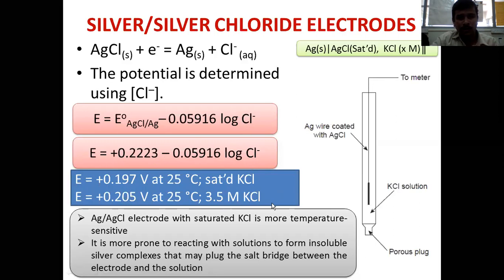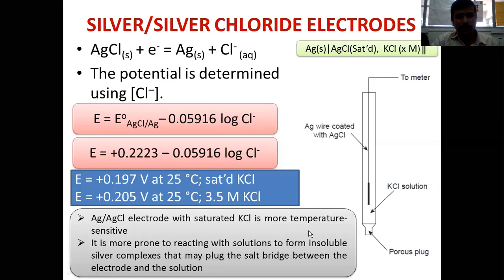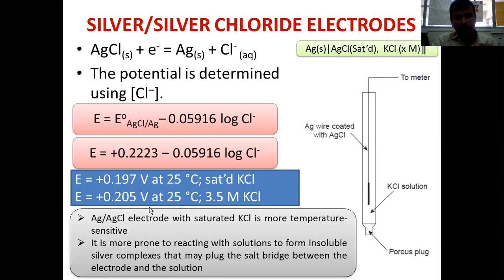For this electrode, a lower KCl concentration gives a higher E value. This electrode is also sensitive to concentration of KCl. Furthermore, this electrode is more temperature sensitive: if you increase the temperature, the chloride ion concentration increases and E value becomes lower. If you decrease the temperature, the KCl concentration decreases, chloride ion concentration goes low, and E value becomes higher.